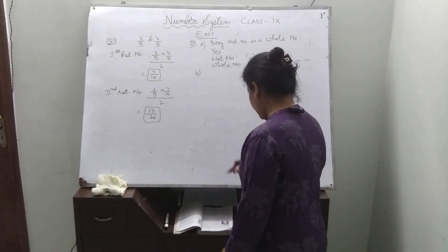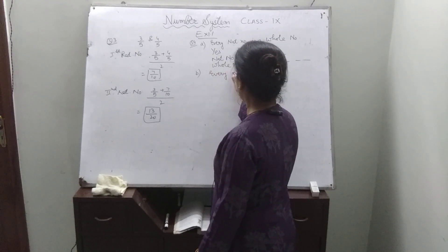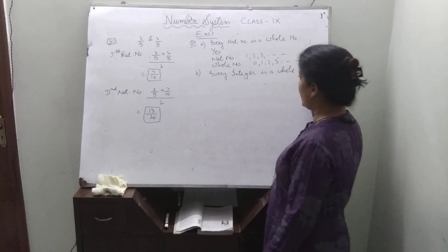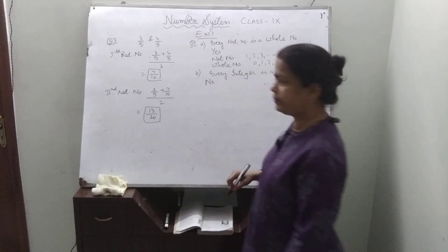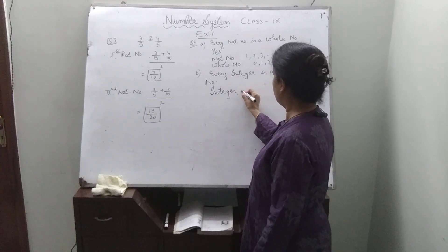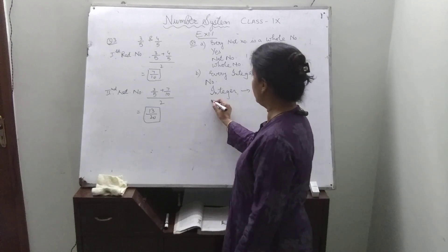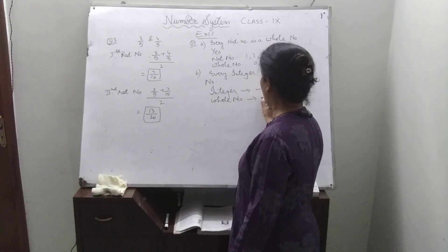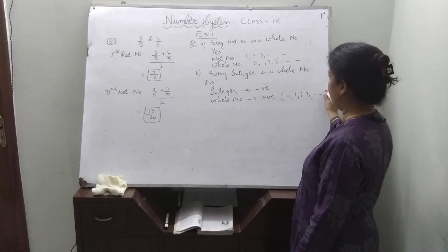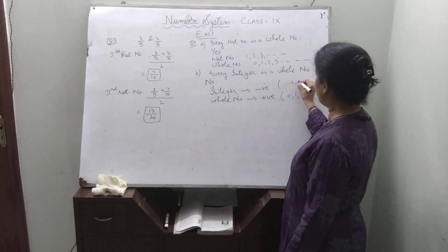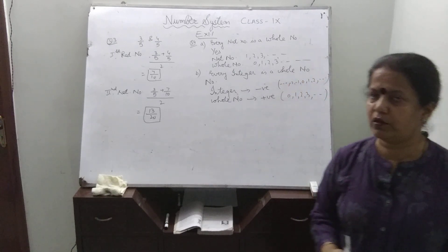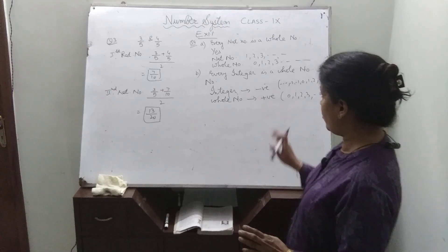Next part — every integer is a whole number? No. Because integers can be negative, but whole numbers are always positive including 0. For example, whole numbers are 0, 1, 2, 3, but integers can be minus 2, minus 1, 0, 1, 2 and so on. So integers can be negative numbers also, but whole numbers are always positive including 0. Therefore the answer is no.